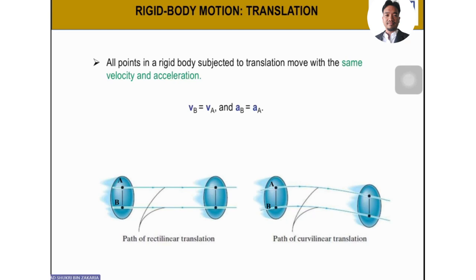For rigid body translation, all points in a rigid body subjected to translation move with the same velocity and acceleration. So if we have an object moving from position one to position two, every point — say point A and point B — moves with the same velocity. So V_A must equal V_B, and similarly the acceleration is the same.